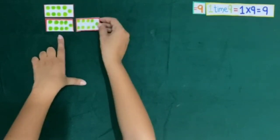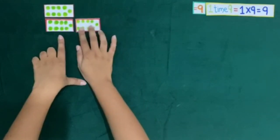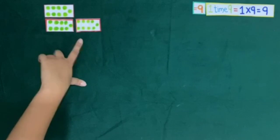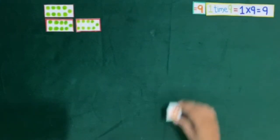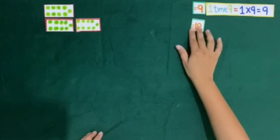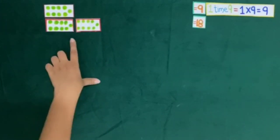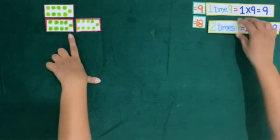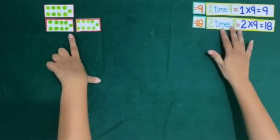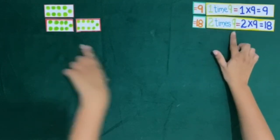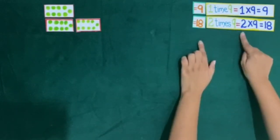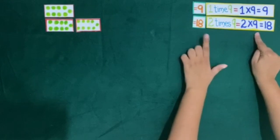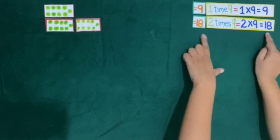If we take another card of 9 dots, then 9 plus 9 is equal to 18. So we have 2 cards. So 2 times 9 is equal to 2 multiplied by 9, which is equal to 18.